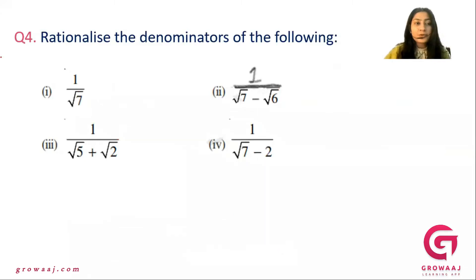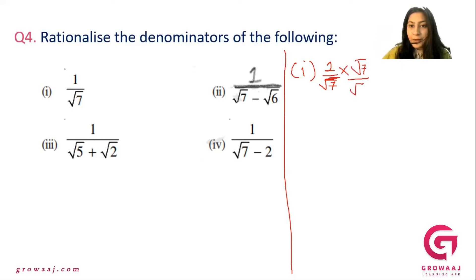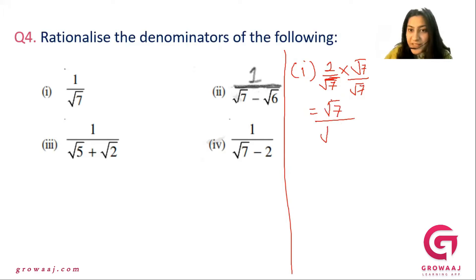Next, question number 4: rationalize the denominator of the following. Part 1 is 1 by square root of 7. If you have one term in the denominator, you multiply and divide by square root of 7. So you get square root of 7 over 7, because square root of 7 times square root of 7 gives square root of 49, which equals 7.